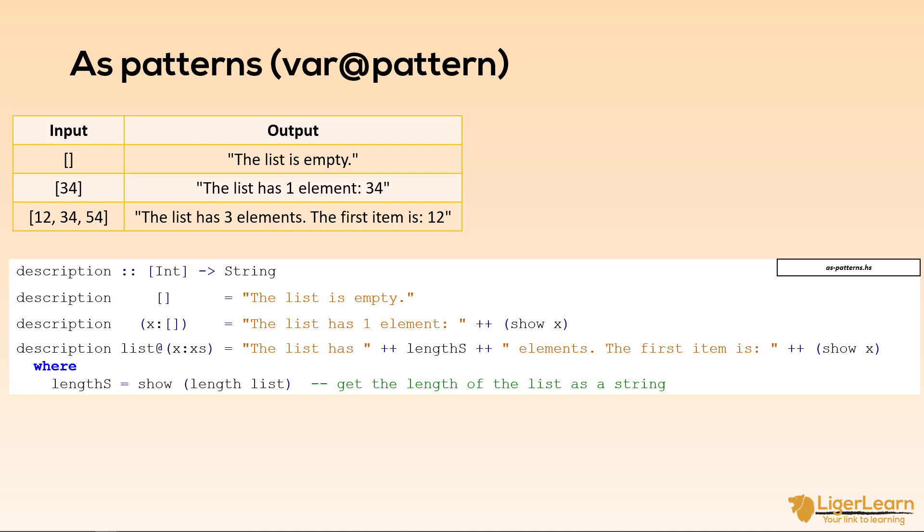This is done with what is known as an as pattern. An as pattern gives a binding to the whole list and also allows you to destructure the list into its parts as we have done here. The syntax for an as pattern is to place the variable name for the whole list first and then an at symbol followed by the destructuring pattern that you desire.